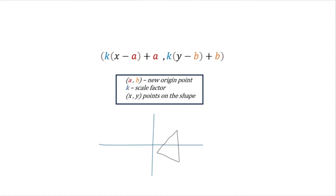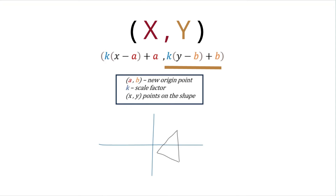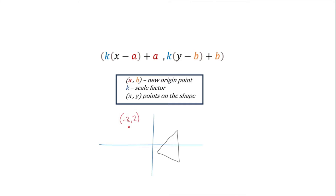Here is the formula: k times (x minus a) plus a is for your x coordinate; k times (y minus b) plus b is for your y coordinate. Your a, b represents the new origin point — for example, negative 3 comma 2, where negative 3 is your a and 2 is your b. k is the scale factor, and x and y represent each point on your shape.